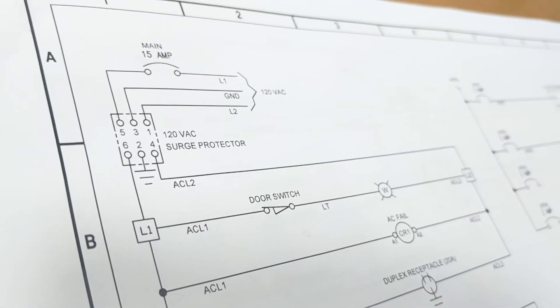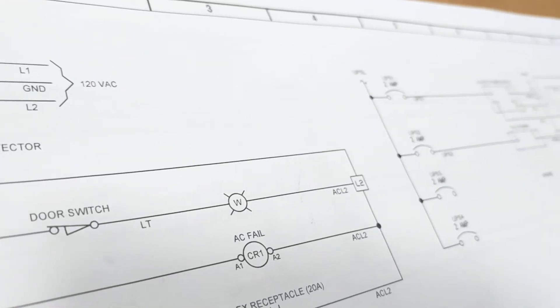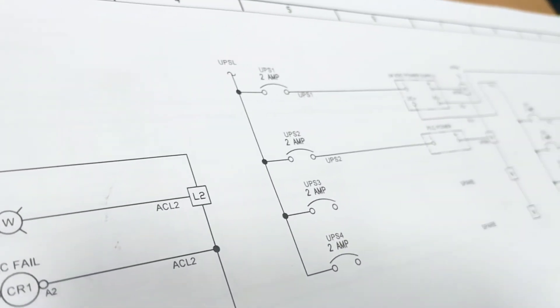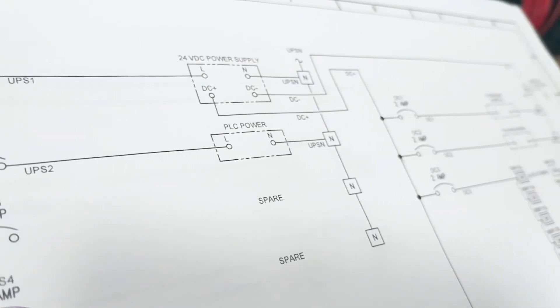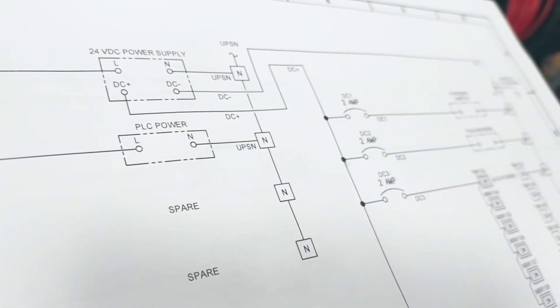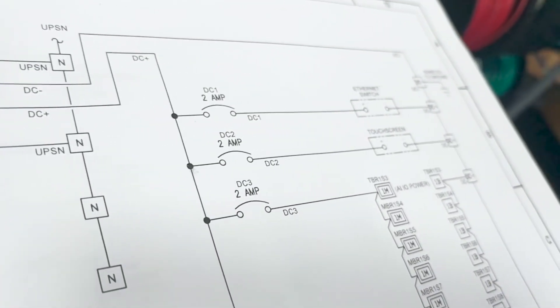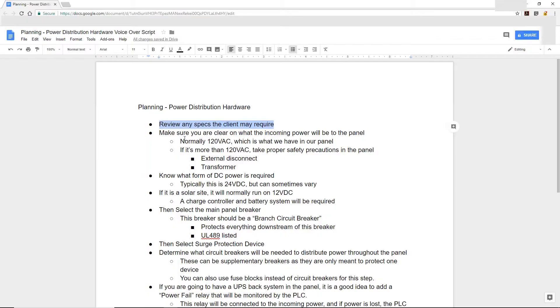One of the first things we should consider when selecting any hardware for our panel is to review any specifications that the client may require for your specific job. We want to make sure we review those specs.